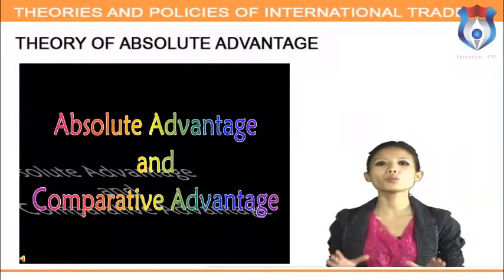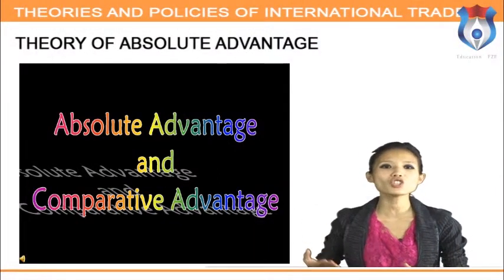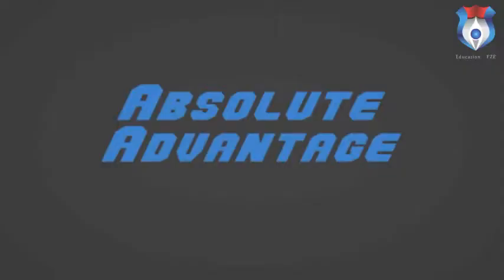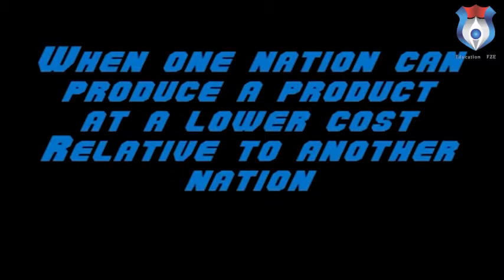The theory of absolute advantage holds that the real wealth of a country consists of goods and services available to its citizens. If any country can produce a particular commodity more cheaply than other countries, it has an absolute advantage. Absolute advantage occurs when one nation can produce a product at a lower cost relative to another nation — using the same amount of resources like land, labor, and capital, one producer can make a good at a cheaper absolute cost. We illustrate this with the two-country, two-good model.